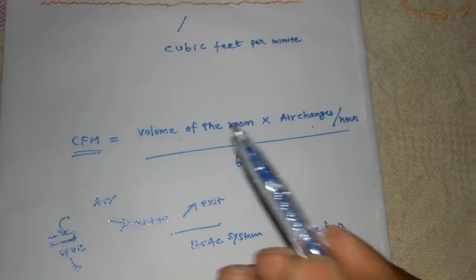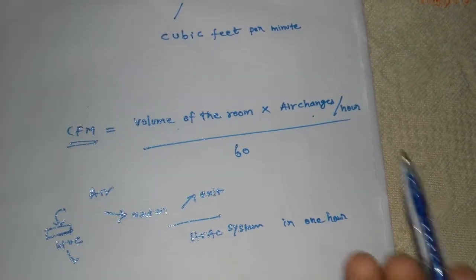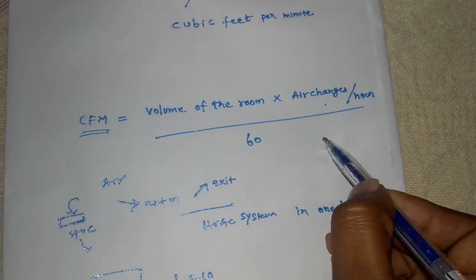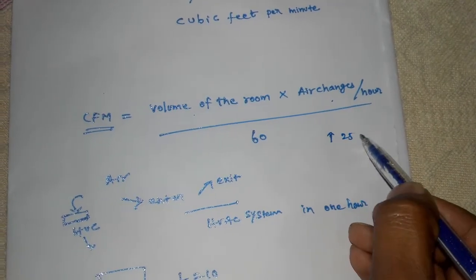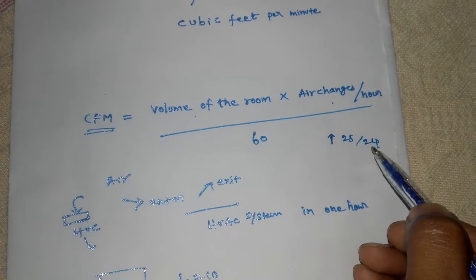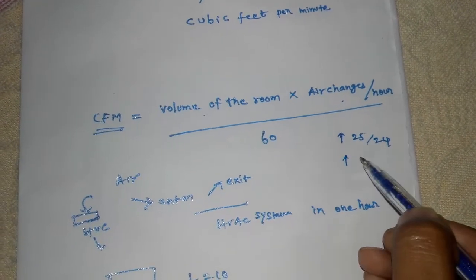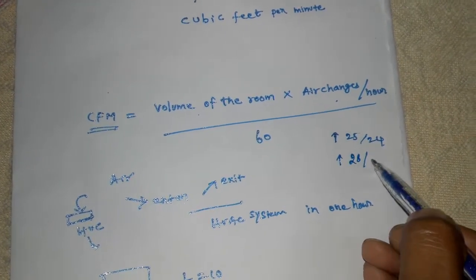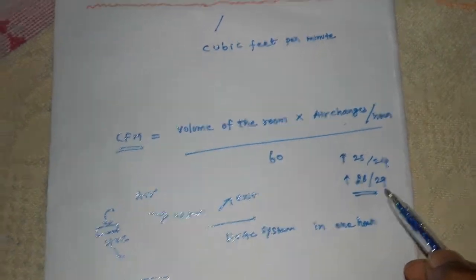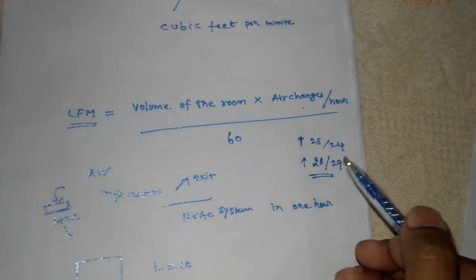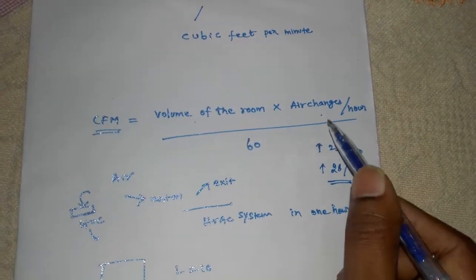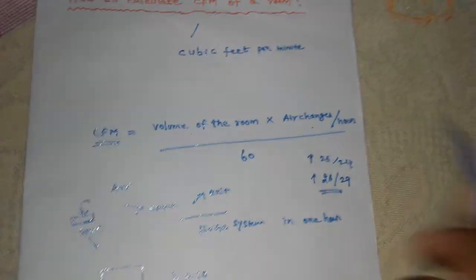Air changes per hour depends on the room temperature. If the temperature is low, around 24 or 25 degrees, fewer air changes per hour are needed. If the room temperature is high, like 28 or 29, more air changes per hour are required. There is a standard table to determine the appropriate air changes per hour.